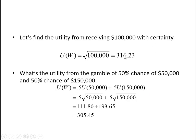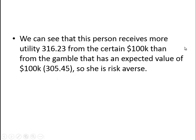So what do we see here? This number is bigger than this number. That means that this individual—and you can see it from the graph we drew—actually gets greater utility by receiving the $100,000 with certainty rather than receiving the gambled amount. So in this case, the person is risk averse.